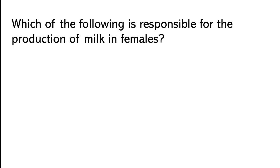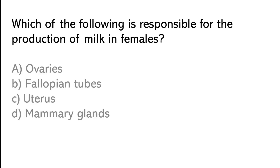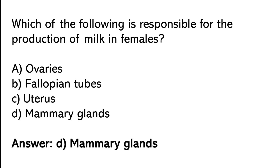Which of the following is responsible for the production of milk in females? Ovaries, Fallopian tubes, Uterus, Mammary gland. So the correct answer is option D. Mammary gland is responsible for the production of milk in females.